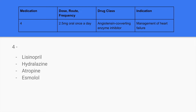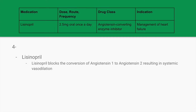The fourth medication is given 2.5mg oral once a day. It is an angiotensin-converting enzyme inhibitor, otherwise known as an ACE inhibitor, and is indicated for the management of heart failure. The answer is lisinopril. ACE inhibitors end in PRIL — so that PRIL ending tells you it is an ACE inhibitor. Lisinopril blocks the conversion of angiotensin-1 to angiotensin-2 in the RAS system, resulting in systemic vasodilation.